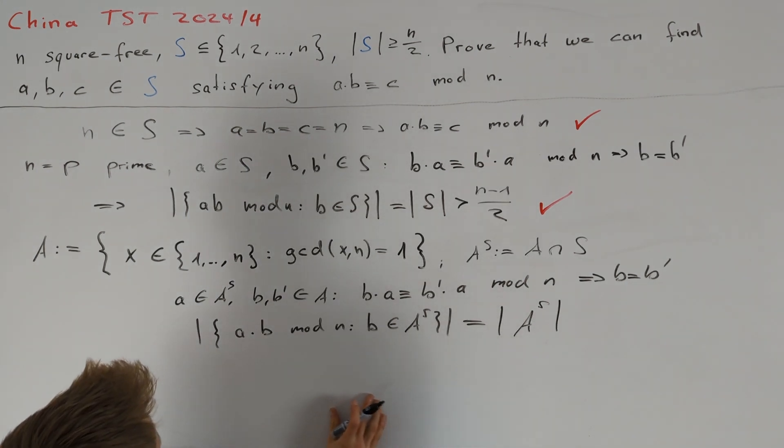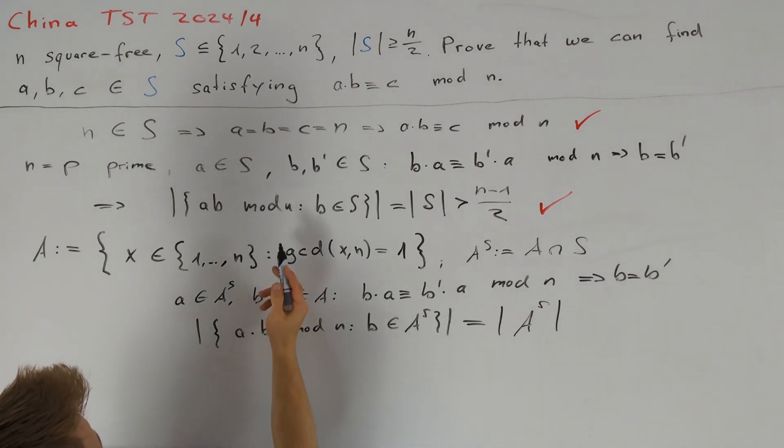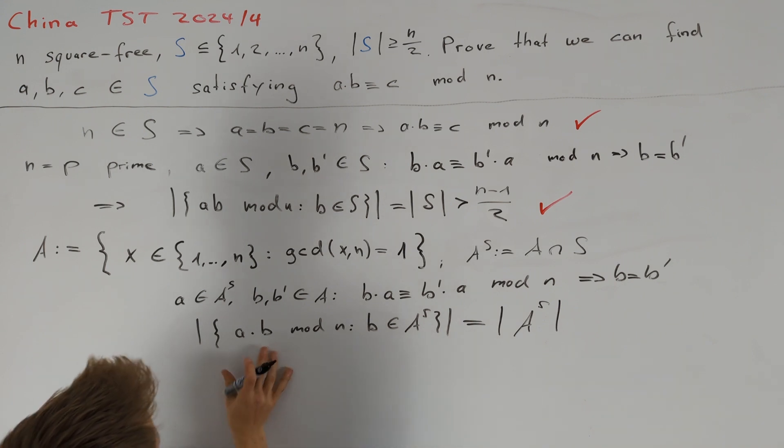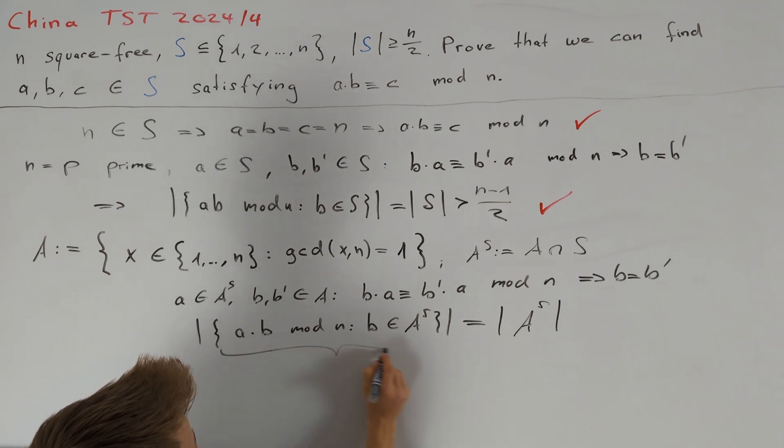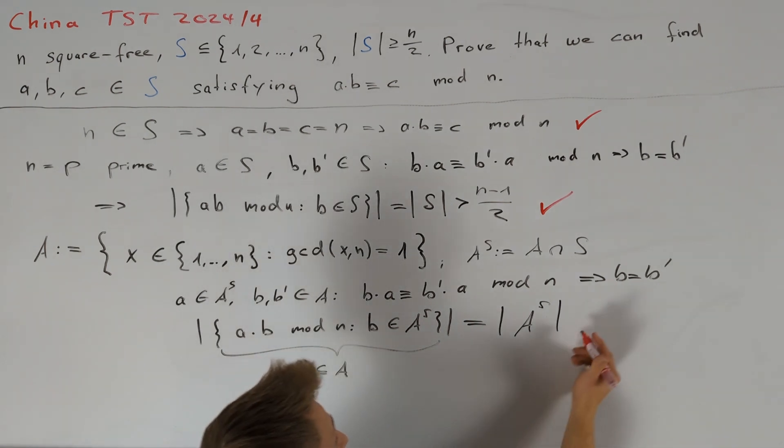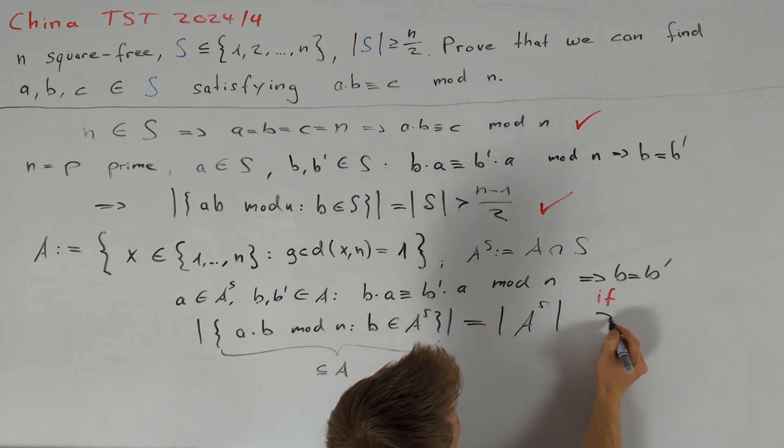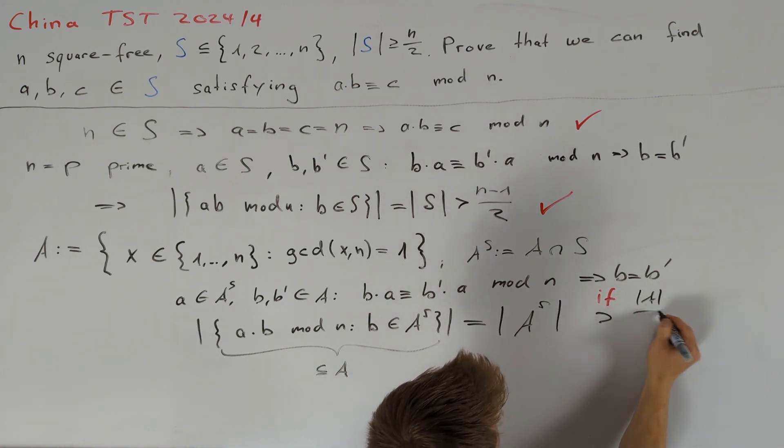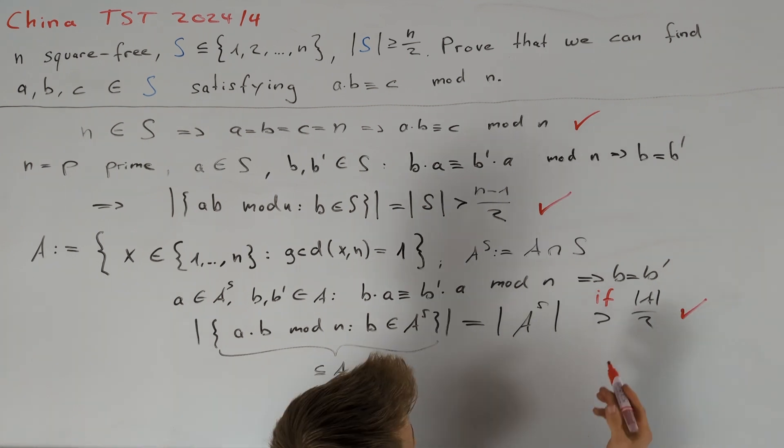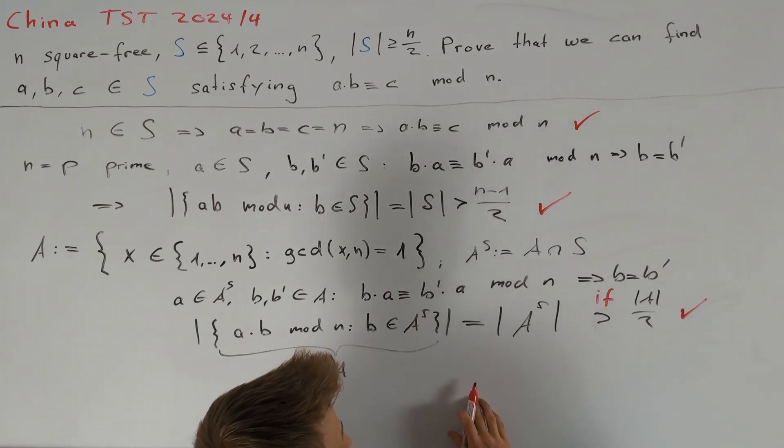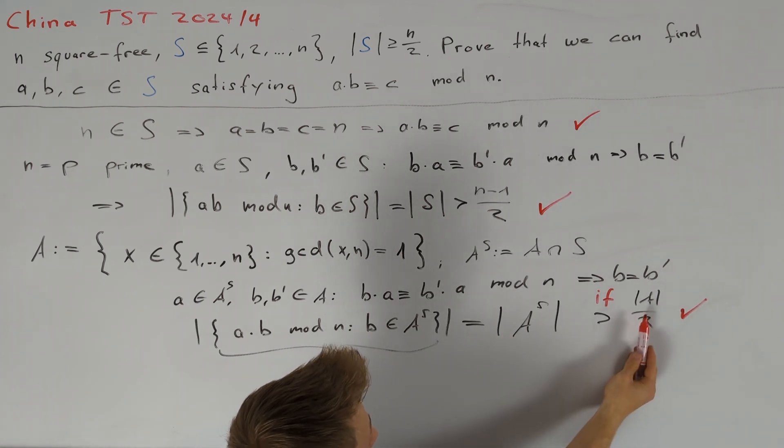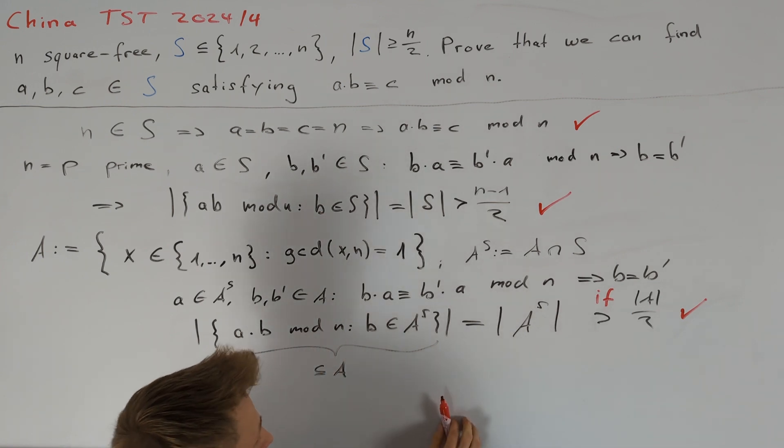We know that the cardinality of this set is equal to the cardinality of A_S. Here, I want to note that since both a and b are co-prime to n, we also know that a times b is co-prime to n. Therefore, this set here on the left-hand side is a subset of our set A. Hence, if we get that this cardinality here is greater than half of the cardinality of A, then we are done. We have now split up our set S into two sets, the good set A and the rest. And now, let's try to deal with the rest.